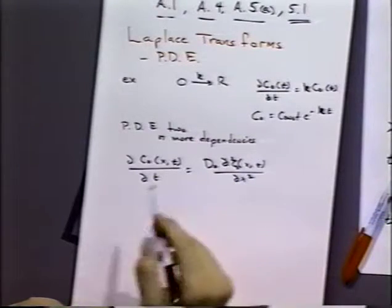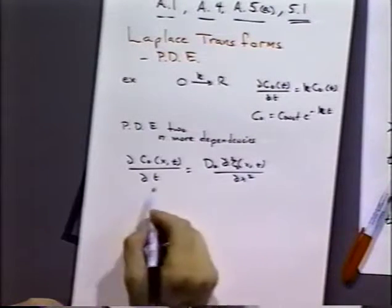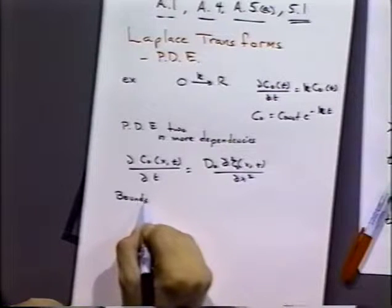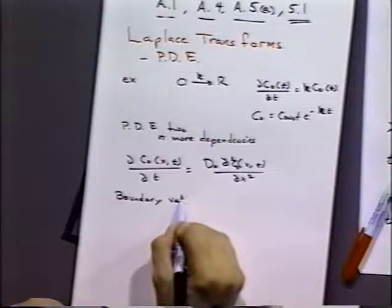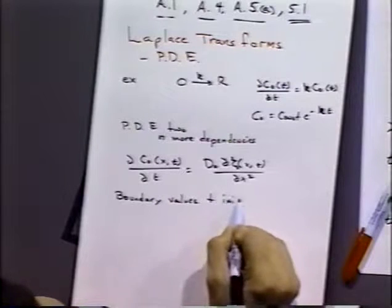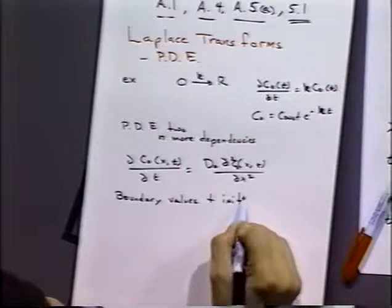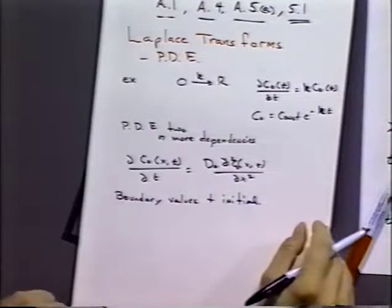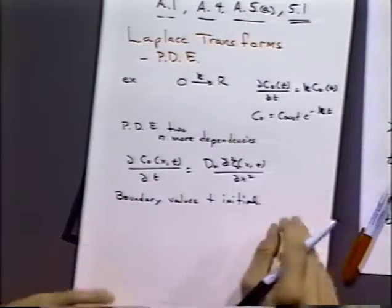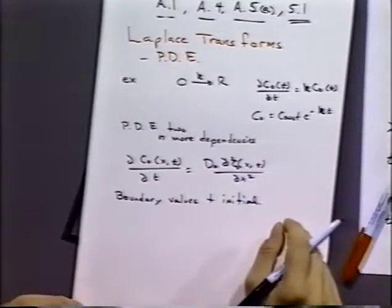A solution to these equations is given by boundary value and initial conditions. In general, the form of the solution we're going to have is strongly dependent on the boundary values that we apply to the system. And that's the critical thing we're going to be learning about in the next lecture or so.